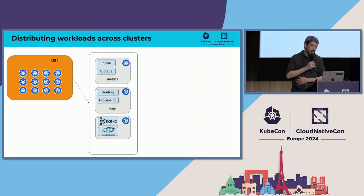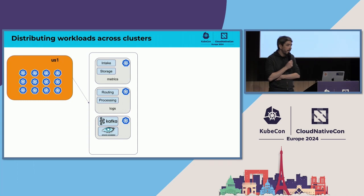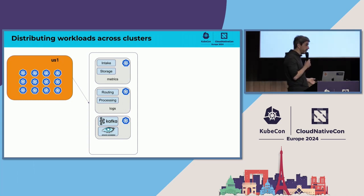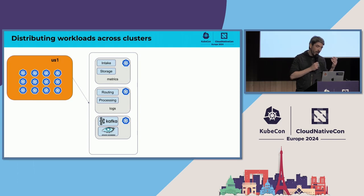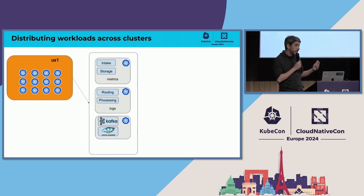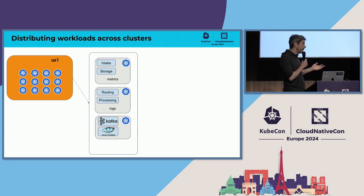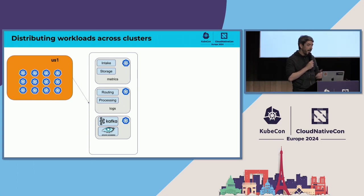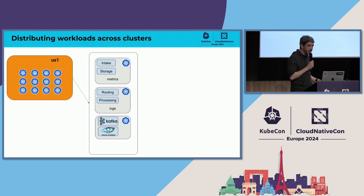If we zoom in into a region, because we have many clusters, we need to assign workloads to clusters. In this very simple example here, we can see three different clusters: one dedicated to metrics, one dedicated to logs, and a third one dedicated to shared services such as Kafka or Cassandra.